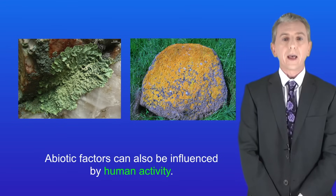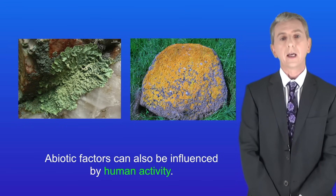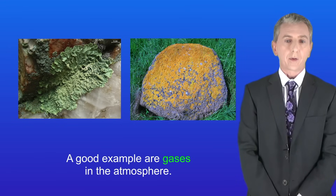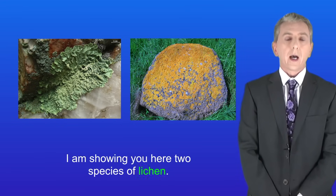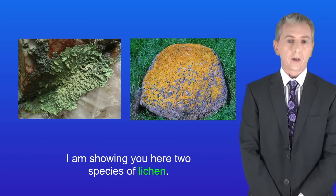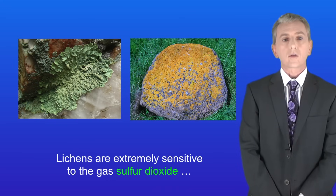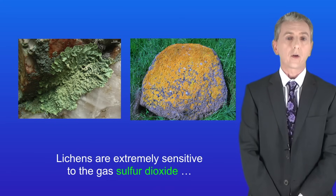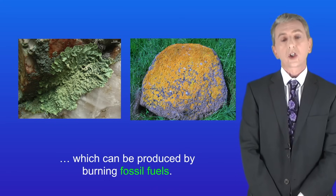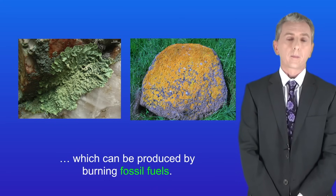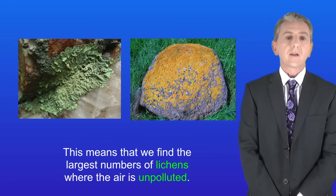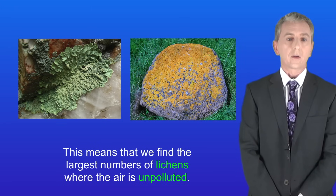Abiotic factors can also be influenced by human activity, and a good example is gases in the atmosphere. Here are two species of lichen, which you may have seen growing on rocks or trees. Lichens are extremely sensitive to the gas sulphur dioxide, which can be produced by burning fossil fuels. This means we find the largest numbers of lichen where the air is unpolluted.